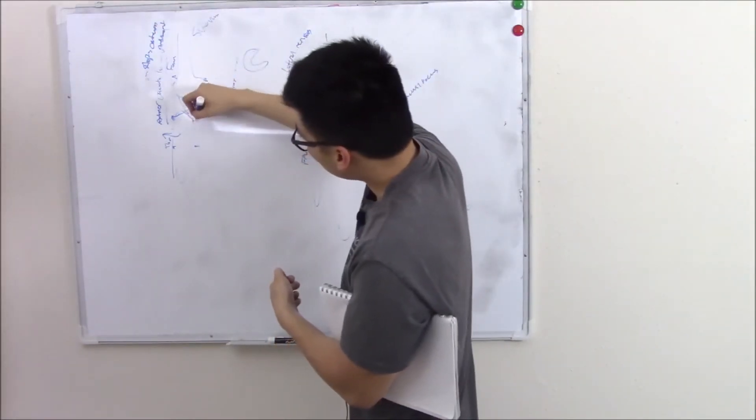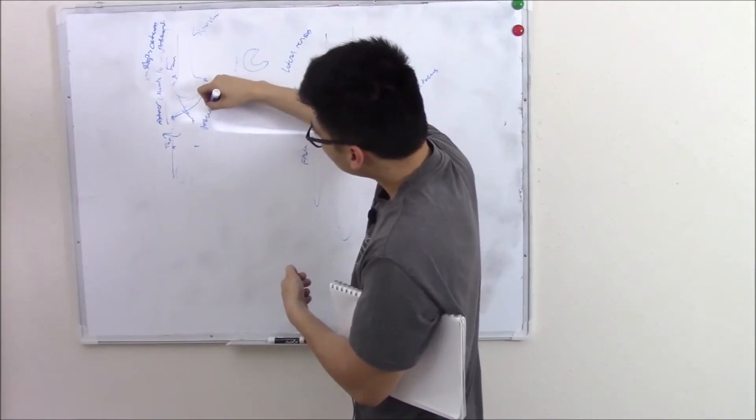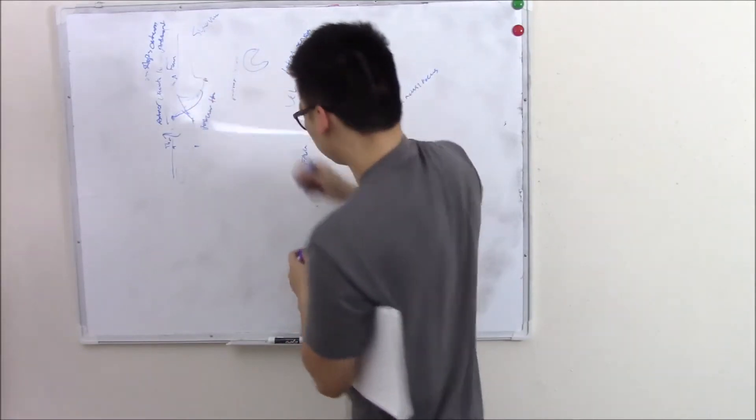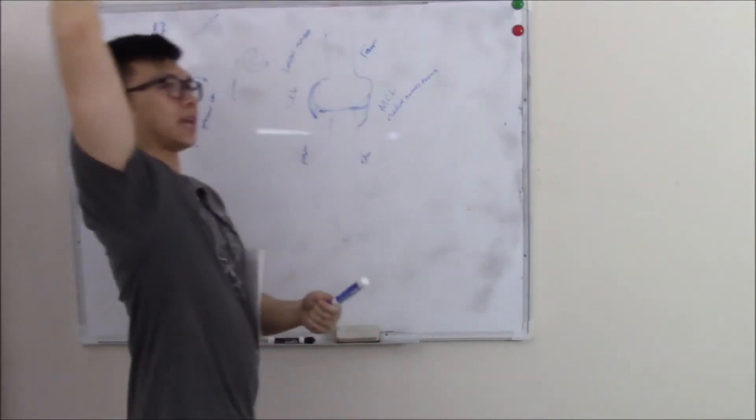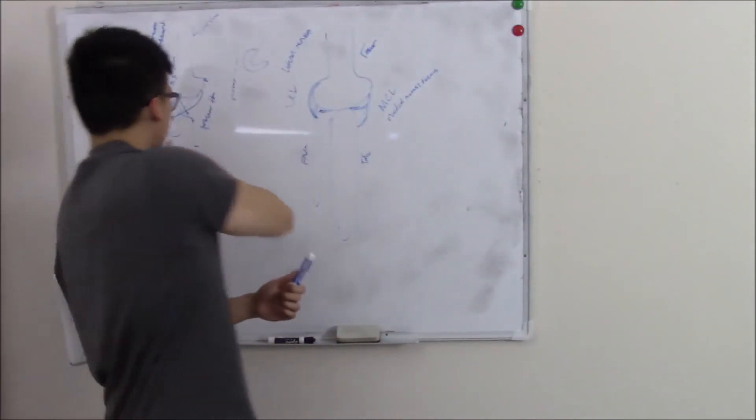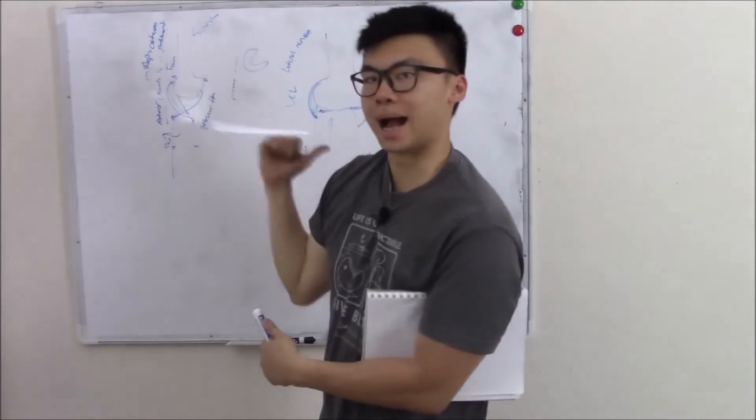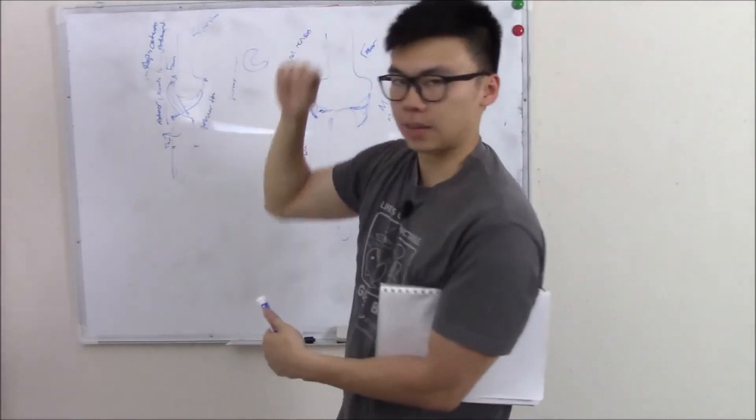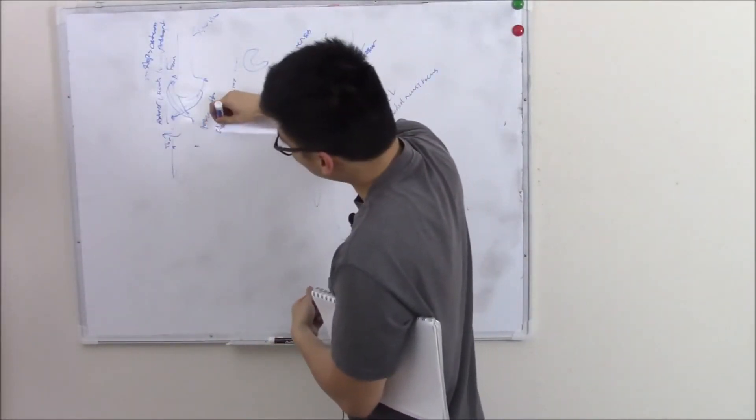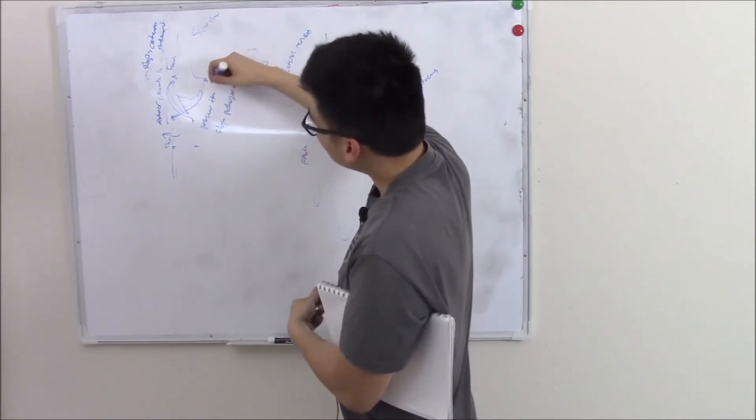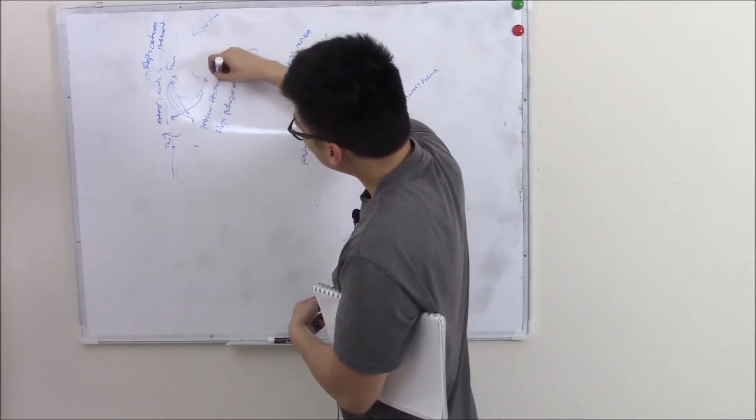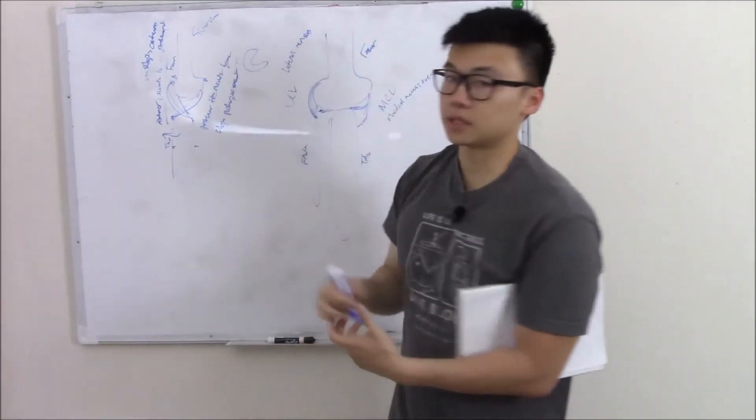There's another ligament that goes from your posterior tibia and attaches to the front of your femur, anchoring in there. If you try to push the tibia back, it'll anchor it and stop it from moving back. So it stops posterior movement. It's called your posterior cruciate ligament. That's your ACL and your PCL.